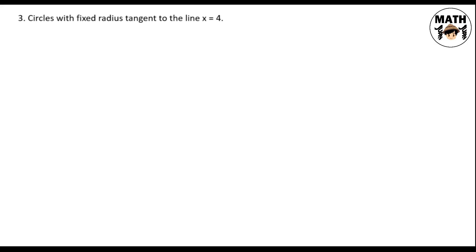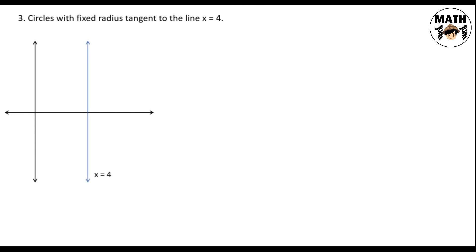Problem number 3: Circles with fixed radius and tangent to the line x equals 4. Let's draw representative circles. First, draw the vertical line x equals 4. Then draw circles with the same fixed radius (meaning all circles are the same size) and tangent to the line x equals 4 — meaning a point on each circle lies on the line x equals 4.